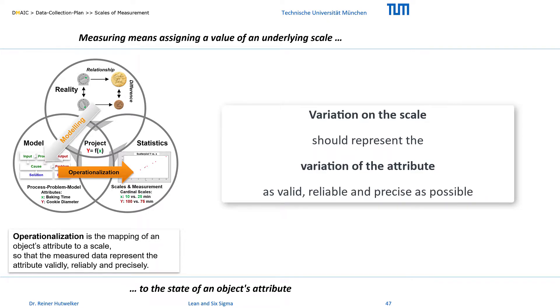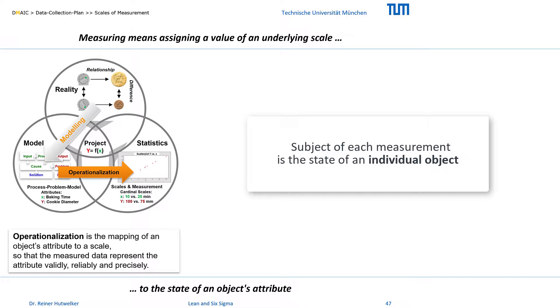With the measurement we want to represent the variation of this attribute as valid and precise as possible by a corresponding variation of the values on a scale. Let us first consider only the individual case, one output, because that is the core of our measurement.